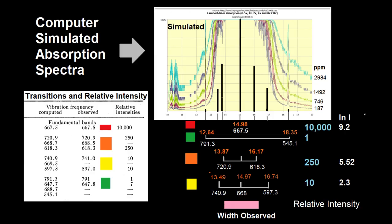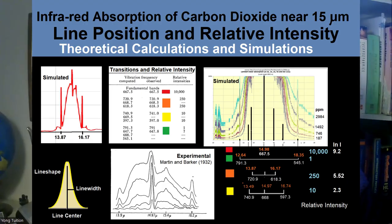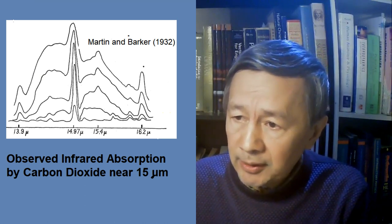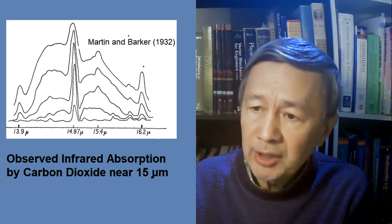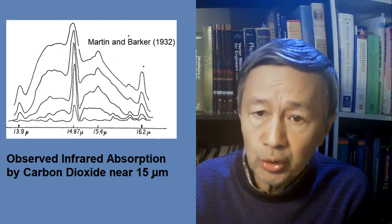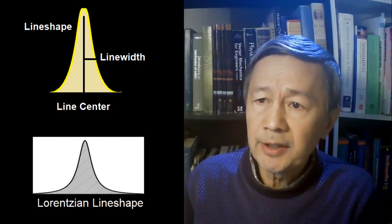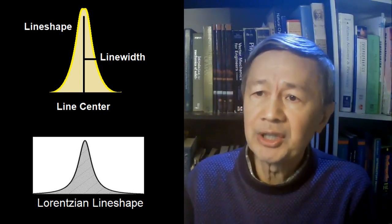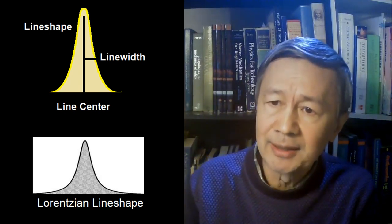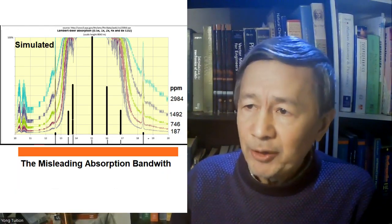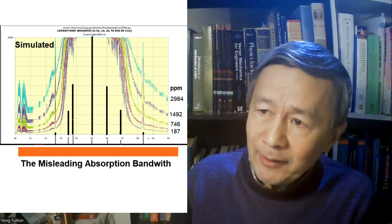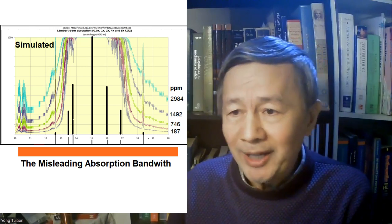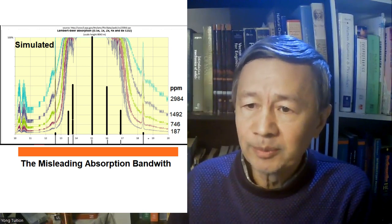Based on a similar model, computer simulated absorption spectra of CO2 at different concentrations are shown here. Also shown in this figure is a related experimental spectrum published by Martin and Barker in 1932. Notice that the CO2 absorption bandwidth is between 13.9 and 16.2 microns, or closer to 2 microns. It is important to understand that each resonance absorption peak is usually simulated using a Lorentzian line-shape function with infinity tails on both sides, which is why the absorption bandwidth could be arbitrarily increased, seemingly beyond 11 to 20 microns, implying that CO2 could absorb more than it actually could.